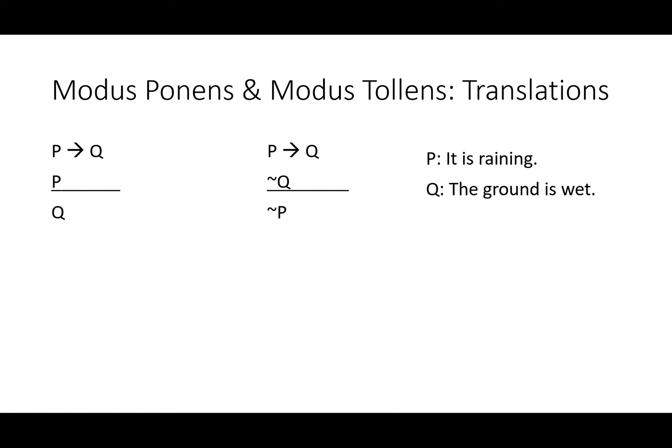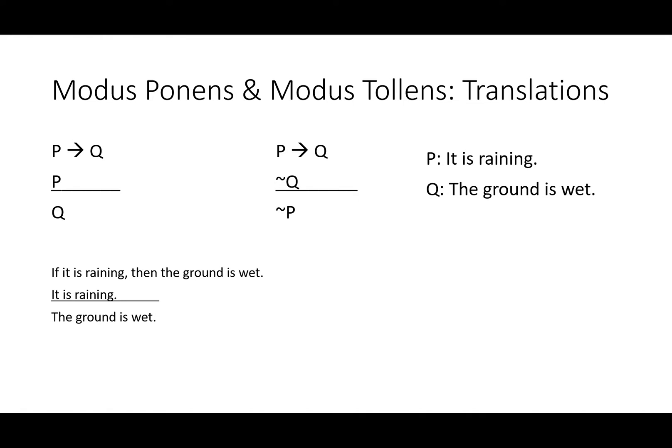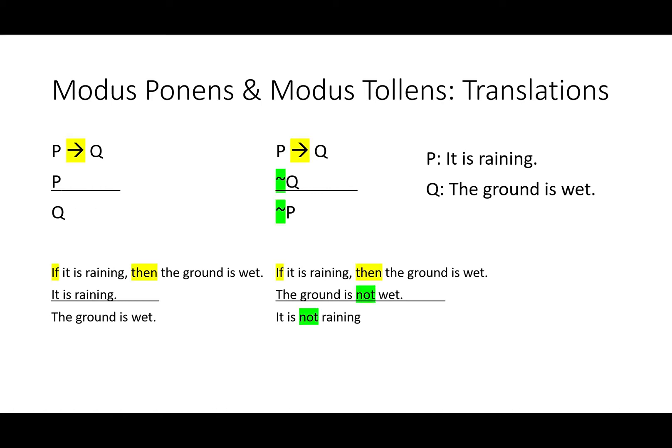Translations often help us understand what rules mean and also help us use them in the real world. We'll substitute 'it is raining' for P and 'the ground is wet' for Q. Modus ponens reads: if it is raining then the ground is wet, it's raining, therefore the ground is wet. Modus tollens reads: if it is raining then the ground is wet, the ground is not wet, therefore it is not raining. Notice that 'if-then' tracks the arrow and 'not' tracks the squiggle.